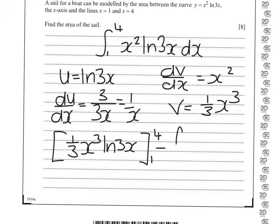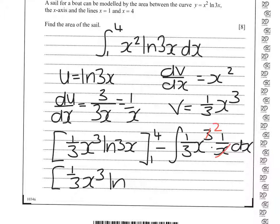Minus the integral of v du dx. So it's minus 1 third the integral of x squared. So that gives us 1 third x cubed ln 3x minus 1 third, and the integral of x squared is 1 third x cubed.